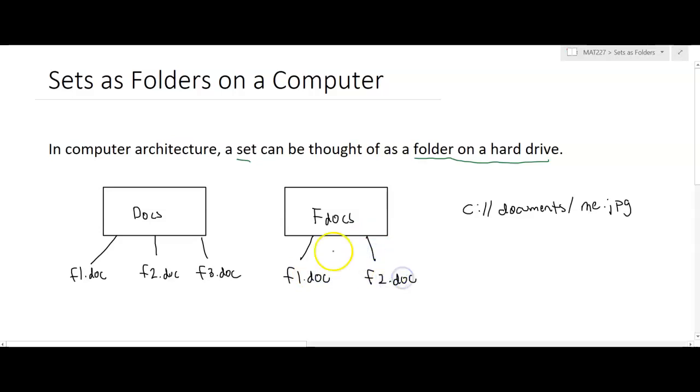So you might imagine this as you've created two folders somewhere on your hard drive. One folder is called docs, one folder is called fdocs. And you've probably done this before where you had the same file in perhaps multiple folders.